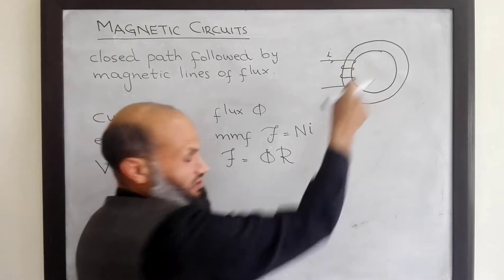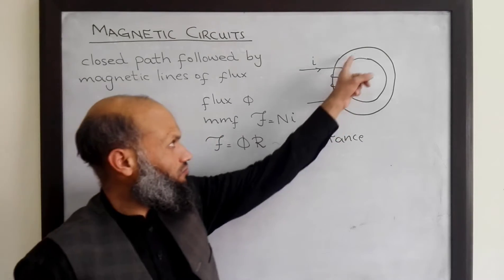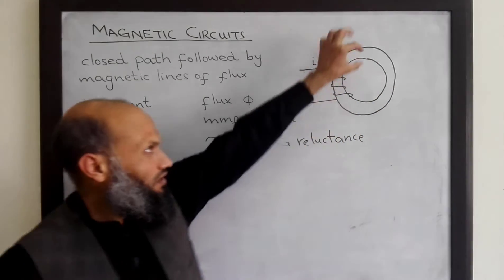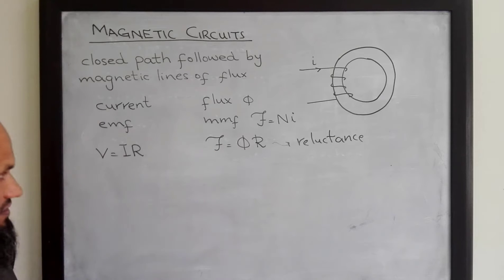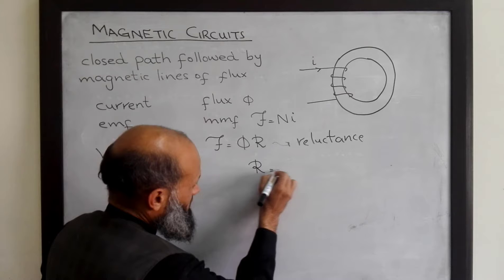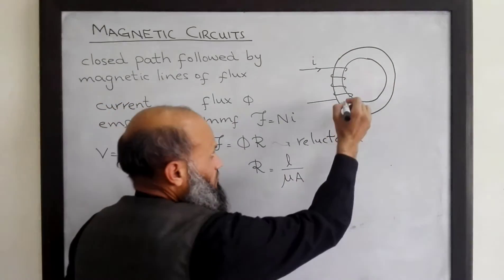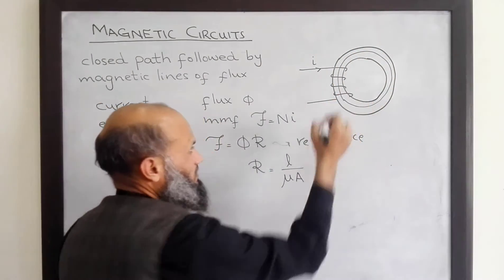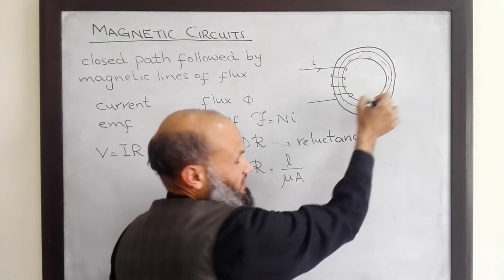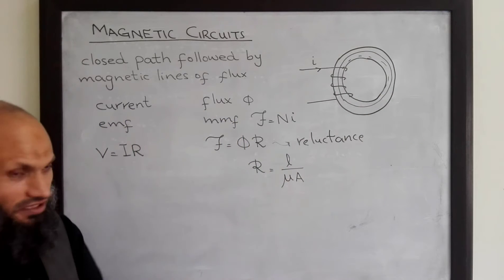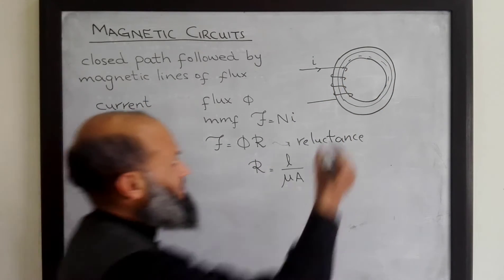The reluctance of the path is related to the length of the path, the cross-sectional area of the path, and the material utilized in the magnetic circuit. That is, reluctance equals L over mu times A, where L is the mean path length followed by magnetic lines of flux, mu is the permeability of the material, and A is the cross-sectional area.